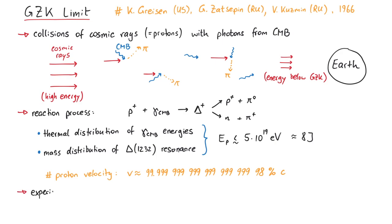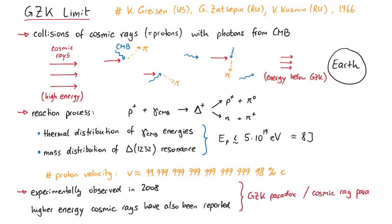This GZK bound was experimentally observed in 2008, although higher energy cosmic rays have also been reported. The question whether the GZK limit has been broken, or if there is another explanation, is called the GZK paradox or cosmic ray paradox.